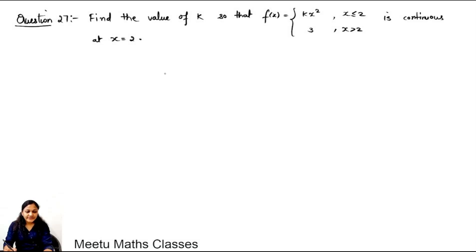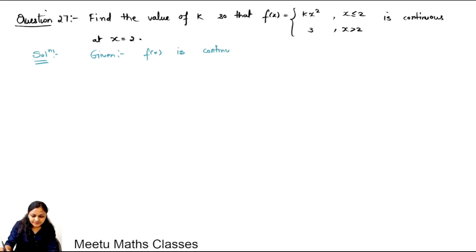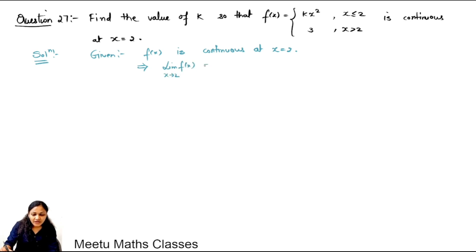Question number 27: find the value of k so that f(x) defined as kx² when x is less than or equal to 2, and 3 when x is greater than 2, is continuous at x equals 2. Since the function is continuous at x equals 2, the limiting value as x tends to 2 must equal the exact value f(2).